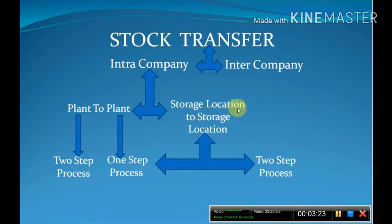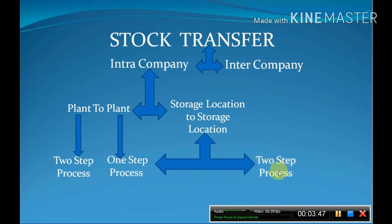We follow the two-step process because in a single step, whether the receiving storage location actually receives the material or not, the system automatically updates the stock status. This can be avoided in the two-step process, which is the preferred process. For this we use T-code MB1B and movement type 313.